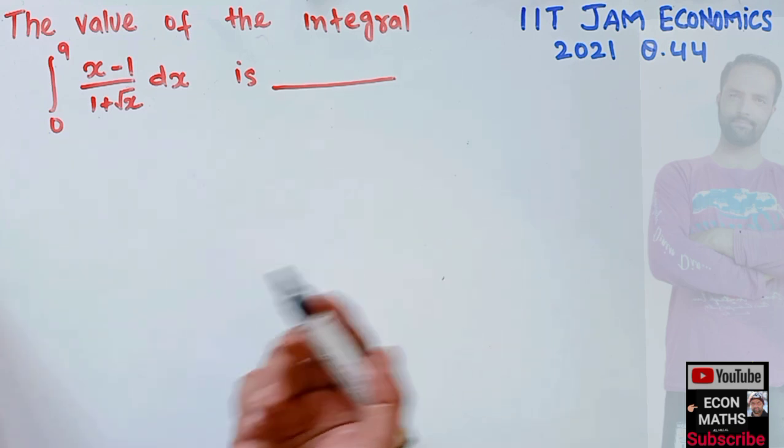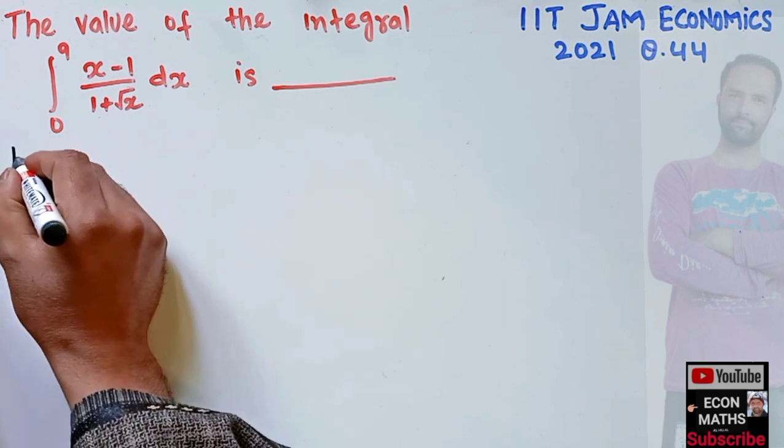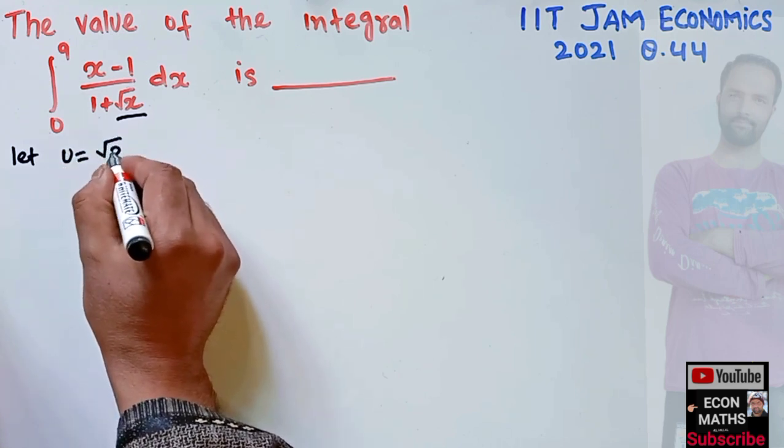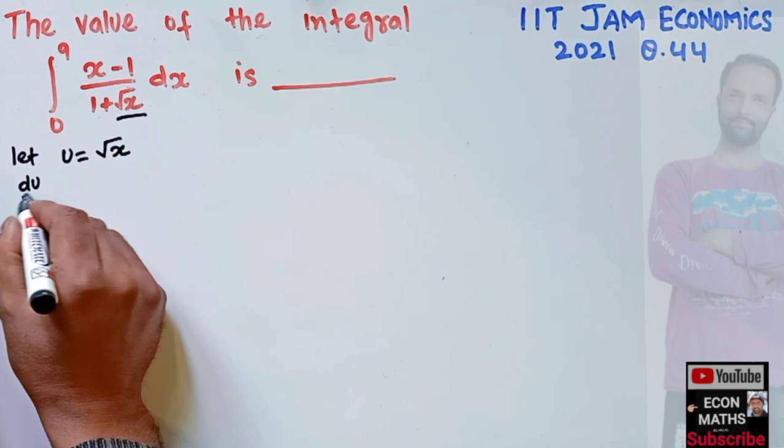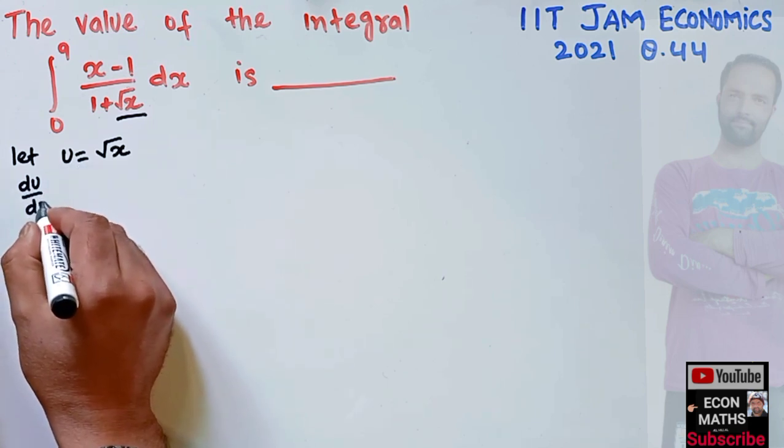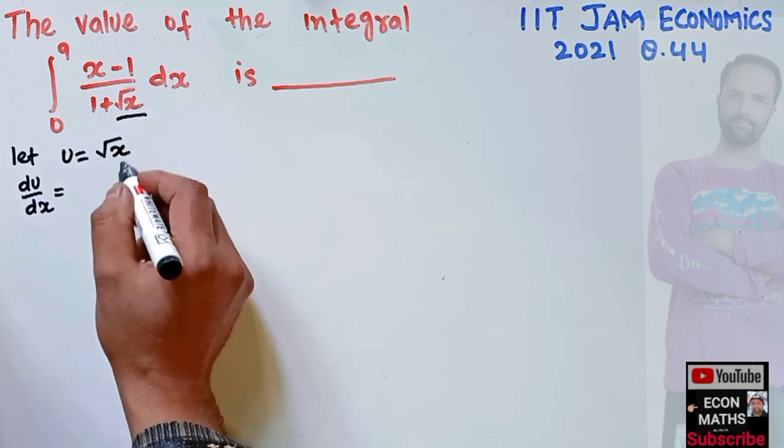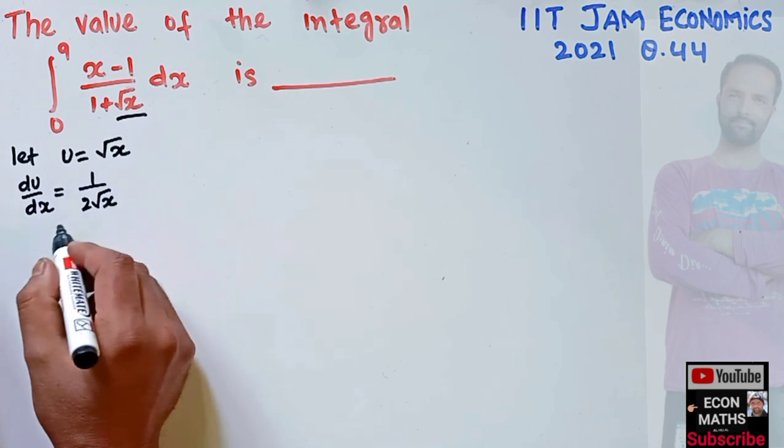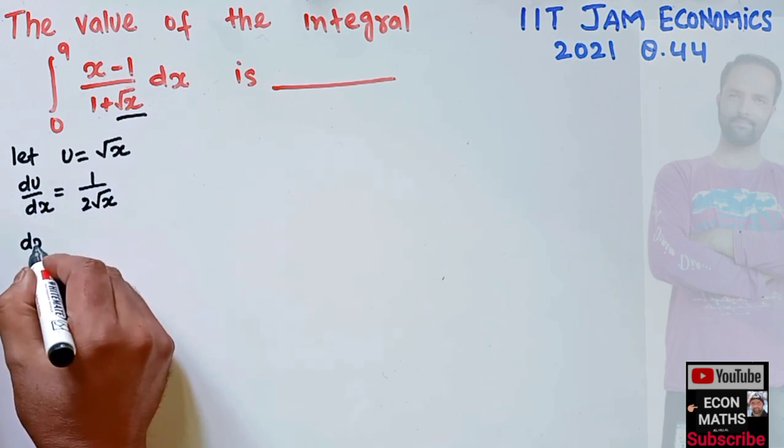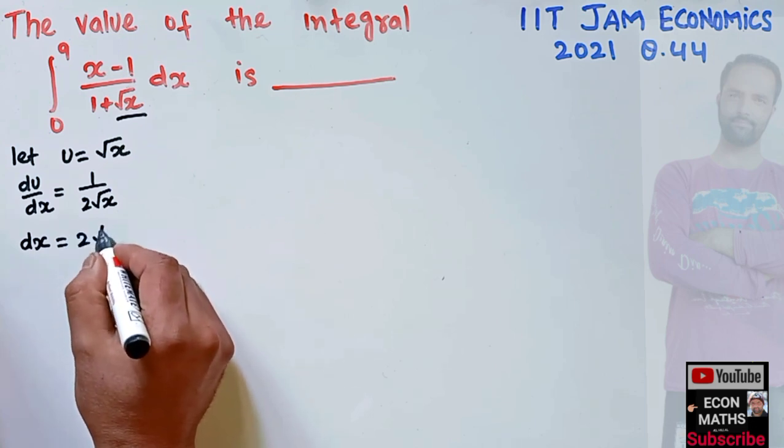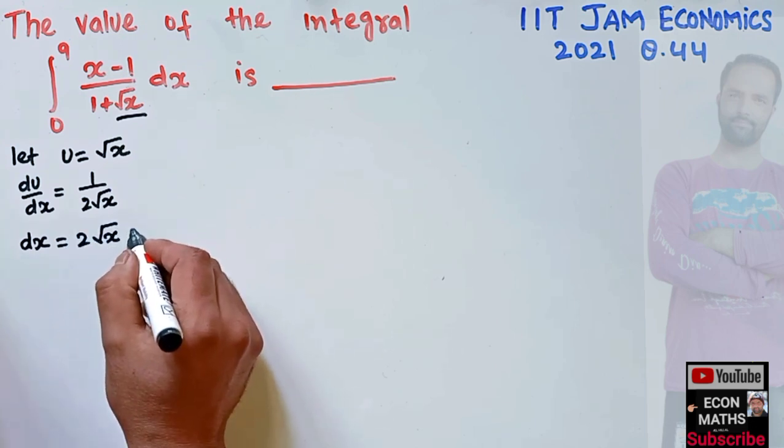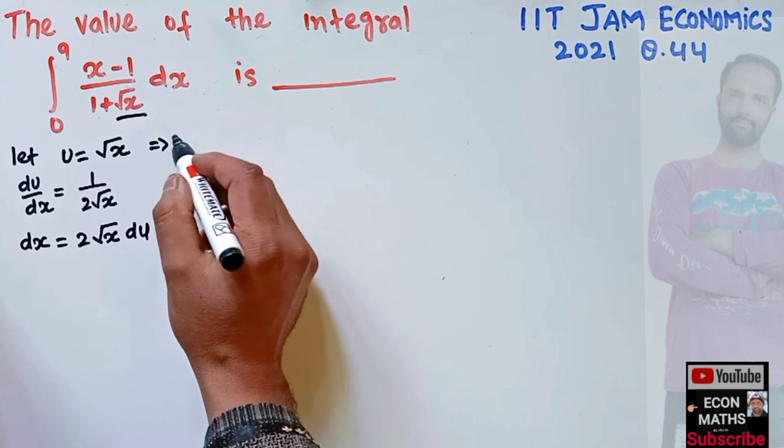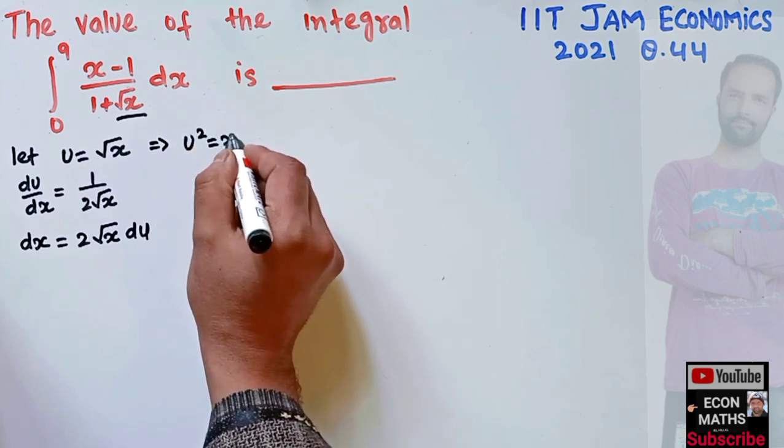We use the substitution method. Let u = √x. Then du/dx, the derivative of u with respect to x, will be equal to 1/(2√x). That means our dx will be equal to 2√x du. Here u = √x, we can also write u² = x.